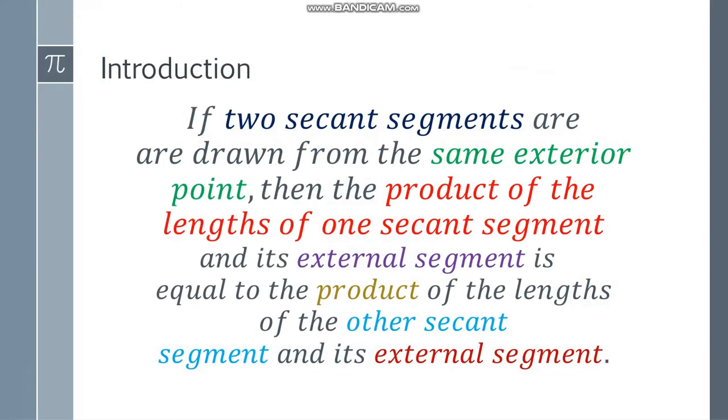Let's start with the introduction. If two secant segments are drawn from the same exterior point, then the product of the lengths of one secant segment and its external segment is equal to the product of the lengths of the other secant segment and its external segment.